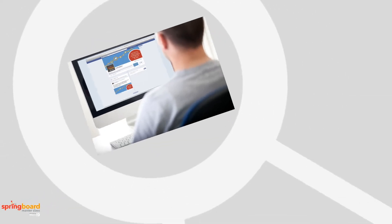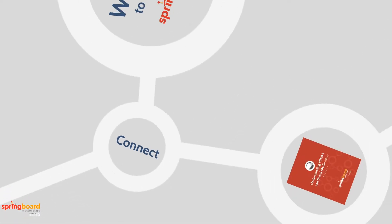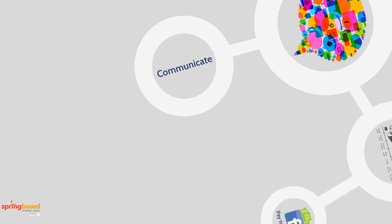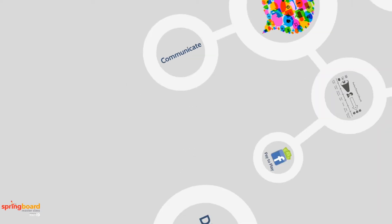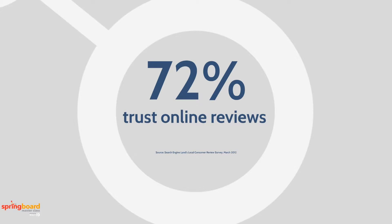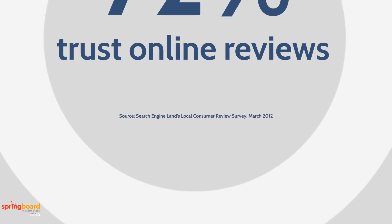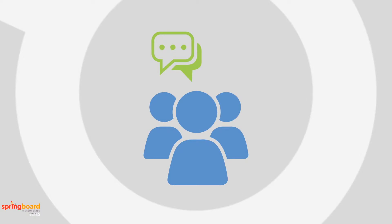No longer was the internet just a source of information. It was now a place to connect, to share, to communicate. This radical shift in the way people in our culture connect and communicate has changed the way we make decisions too. In 2012, Search Engine Land reported that 72% of consumers trust online reviews as much as they trust personal recommendations. The goal of marketing efforts shifted from simple word of mouth — which has always been the holy grail of marketing — to digital word of mouth. All types of organizations were asking the same question: how do we get people to talk about us to their social networks?